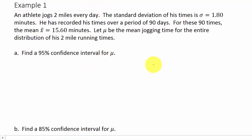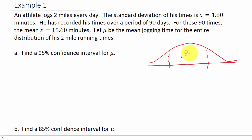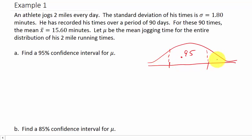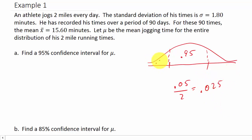The best thing to do is draw it. We want a 95% confidence interval, so in this area is 95%. That means we have 5% left over — this area and this area add up to 5%. We know that this is symmetrical, so if we have 0.05 we get 0.025 on each tail — this is 0.025 and this is 0.025.